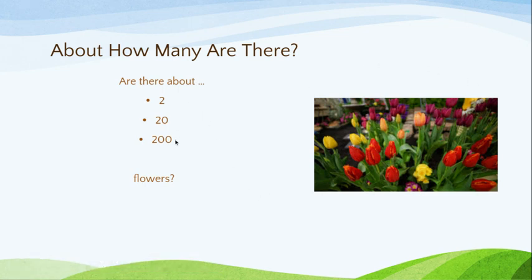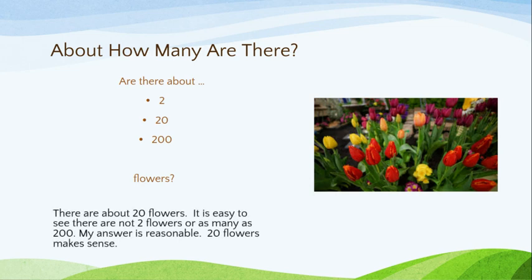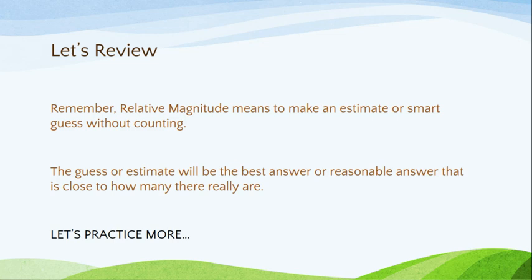About how many are there? Let's look at this picture — are there about 2, 20, or 200 flowers? I'm not spending time counting each individual flower, I'm just using my best guess. I can say there are about 20 flowers. It is easy to see that there are not 2 flowers or as many as 200. Because I can eliminate 2 and 200, this is what makes my answer reasonable — so 20 flowers makes the most sense.